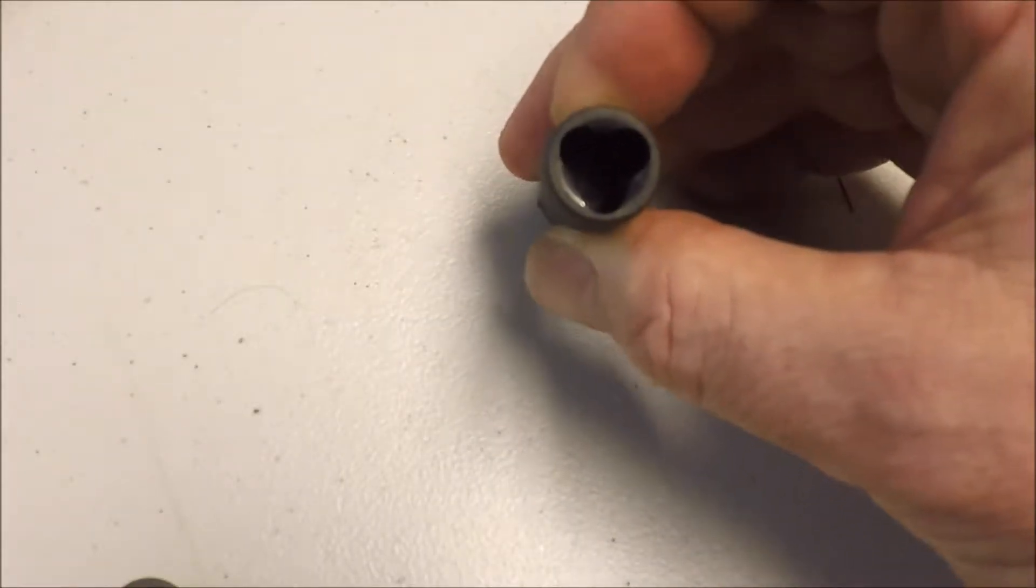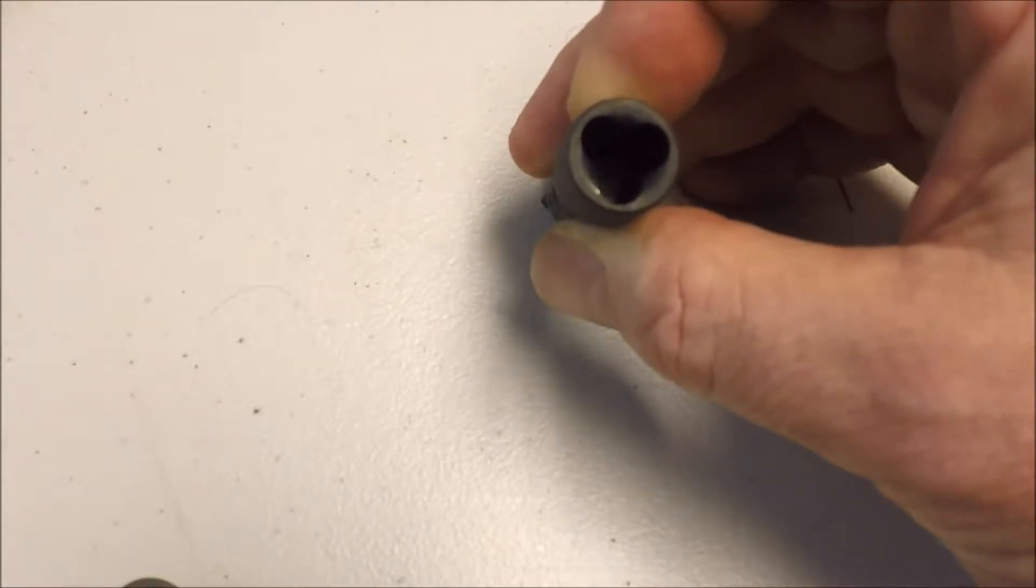The opposite end, this wider end, you put the end of your bolt into this and this scrapes all around the back end of your bolt.